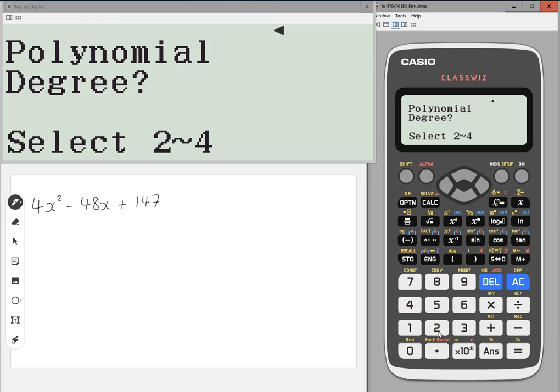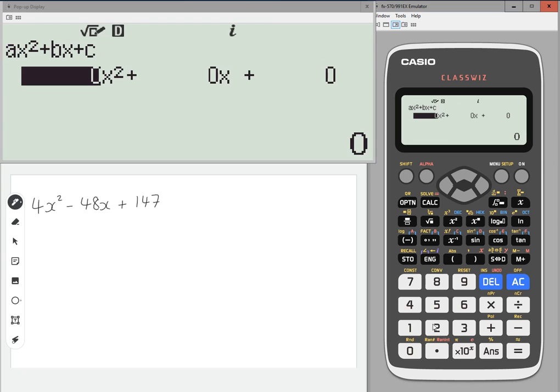And then it's a quadratic, so degree is two. And then we're going to type in 4, minus 48, and 147.